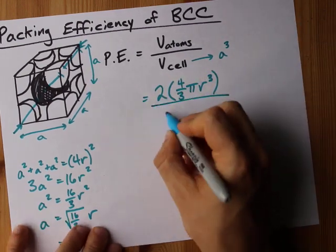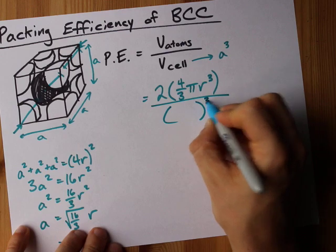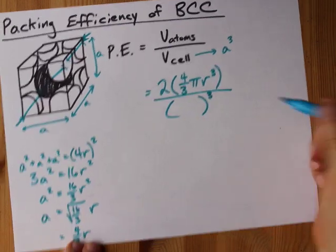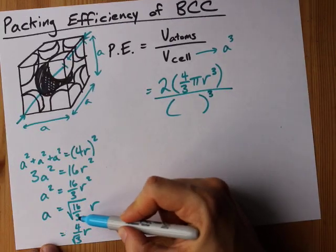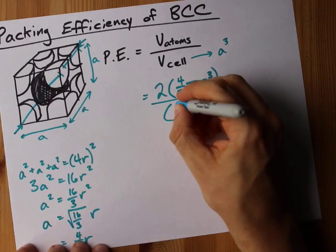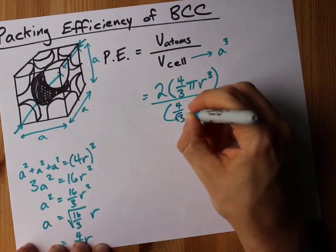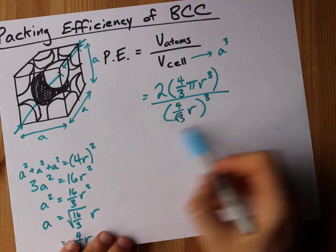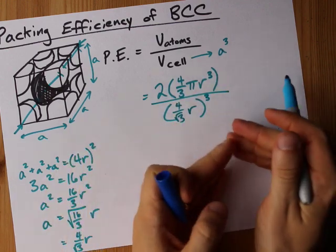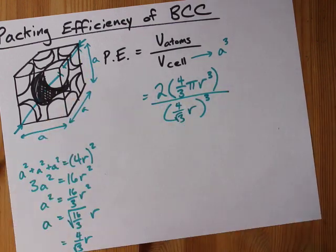Which means that the volume of the cell here is a all cubed, but what is a? a is four over root three times r, four over root three times r. This is the equation you have to simplify in order to get the packing efficiency.